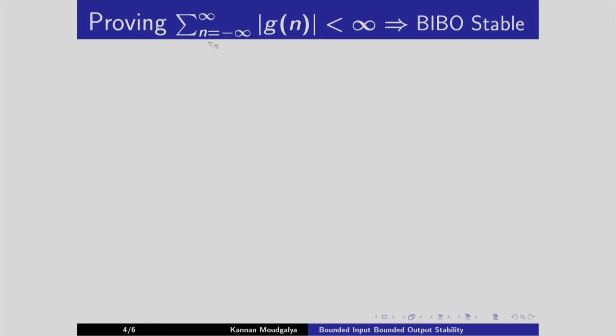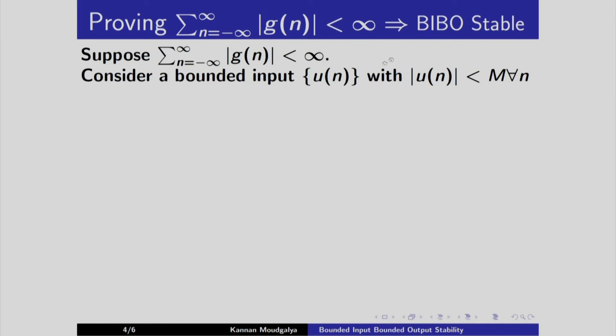We will assume that the absolute sum of the impulse response is bounded. And then we will take a bounded input. Let us consider a bounded input u(n) with bound given by M. That is, the absolute value of u at all n has to be less than some M. Recall the expression.